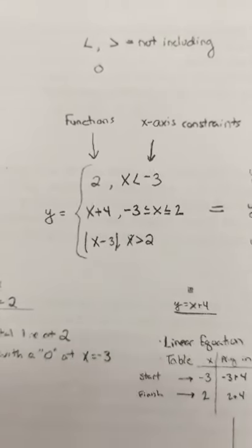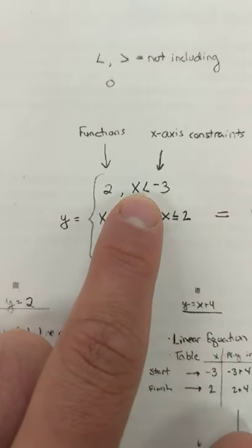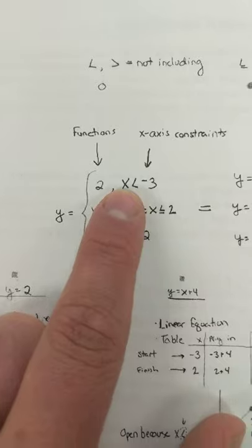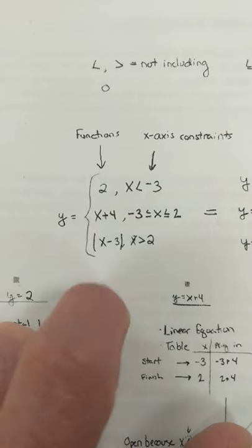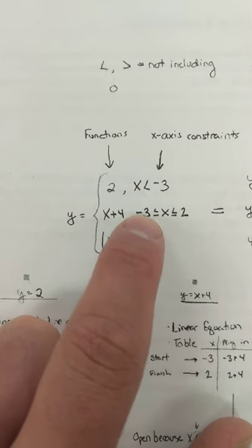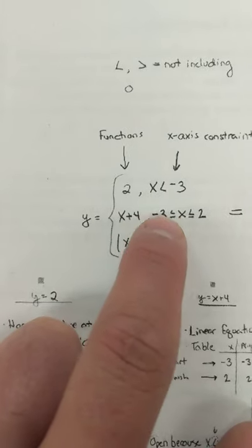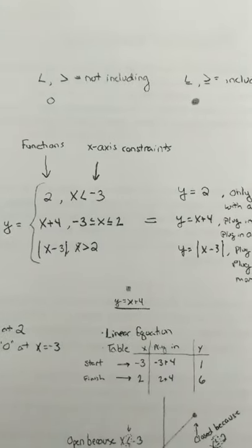Now notice with this piecewise functions, if I am not including negative 3, and I am including it, that's okay. What wouldn't be okay is if I was including negative 3, and I was including negative 3, that would mean we have some overlap, we'd have an issue.